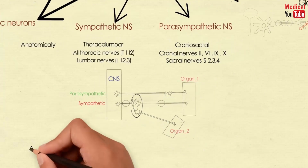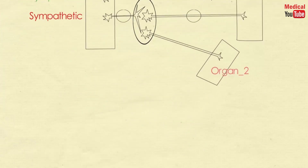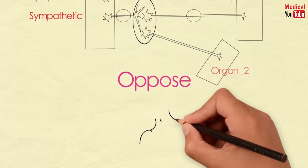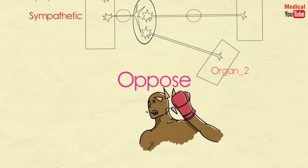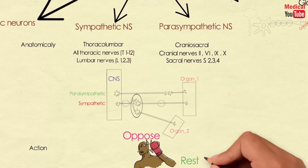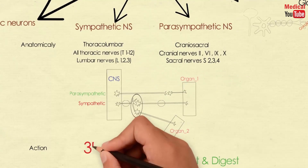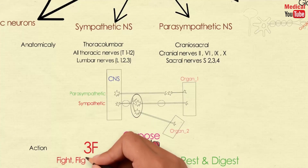Sympathetic and parasympathetic actions often oppose each other. To simplify: parasympathetic is turned on during rest and digest, and sympathetic is turned on in emergencies, which is known as fight, flight, and fright conditions.